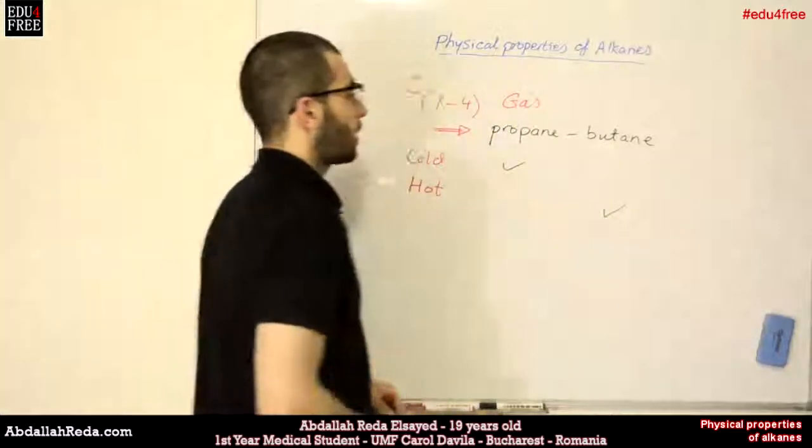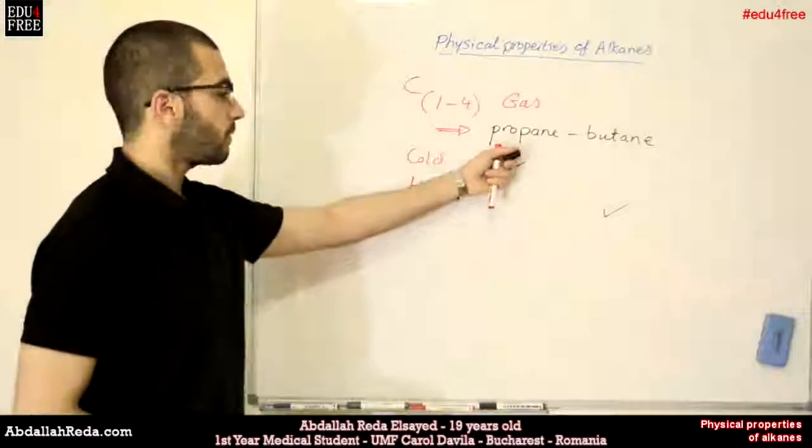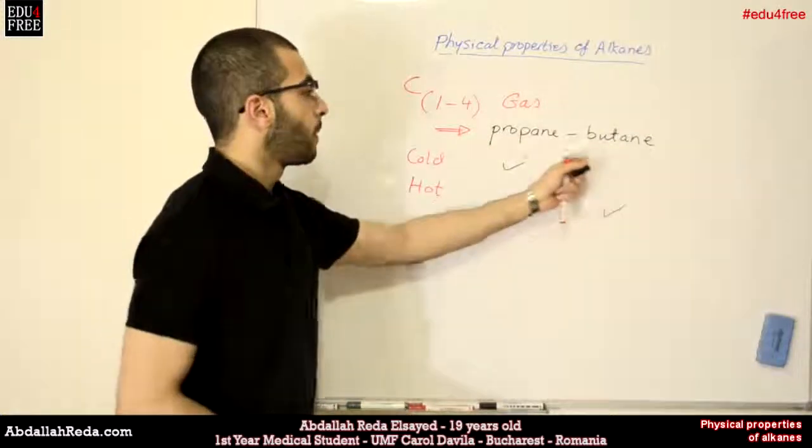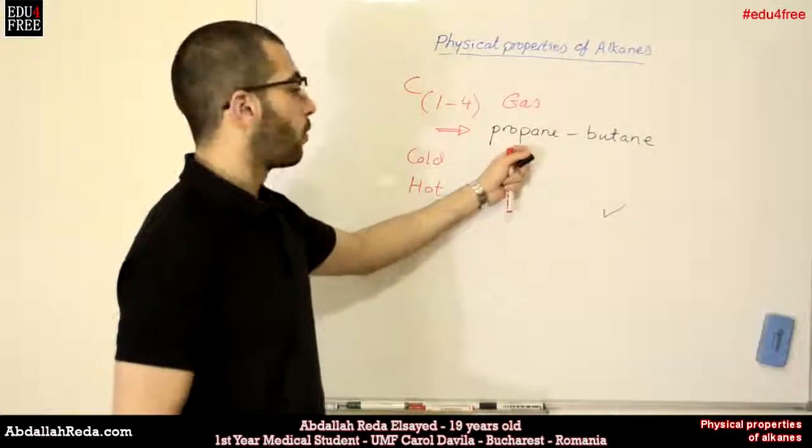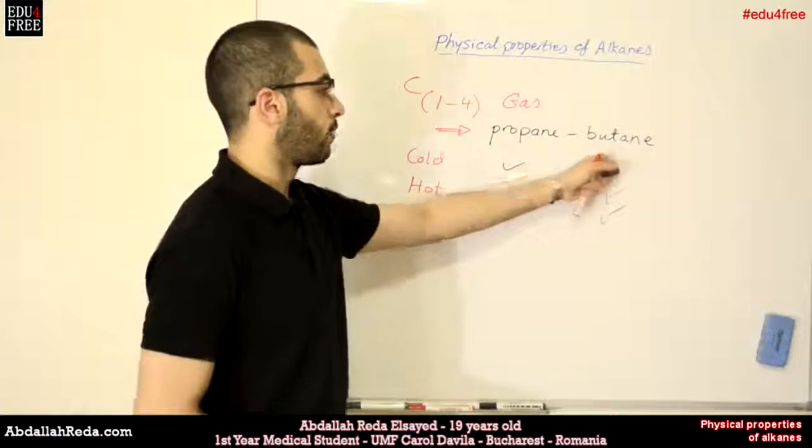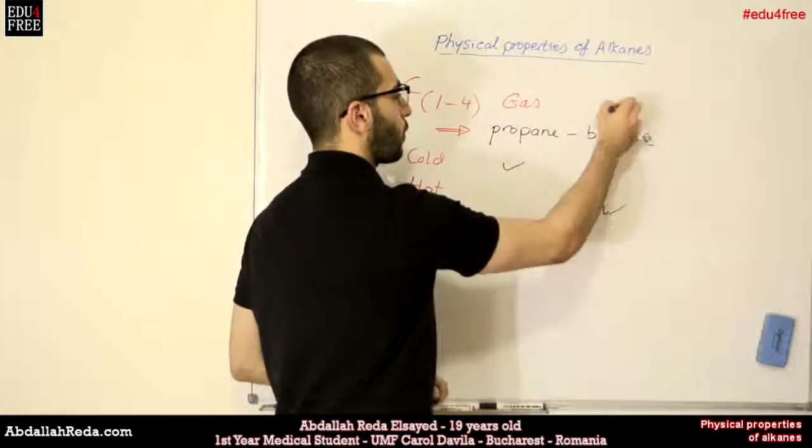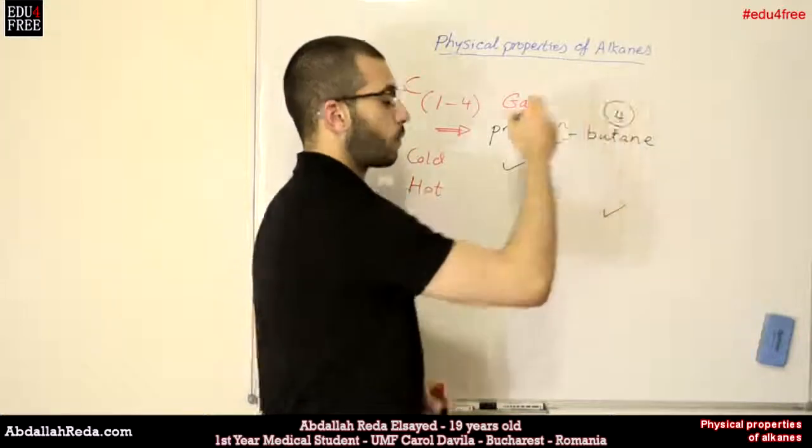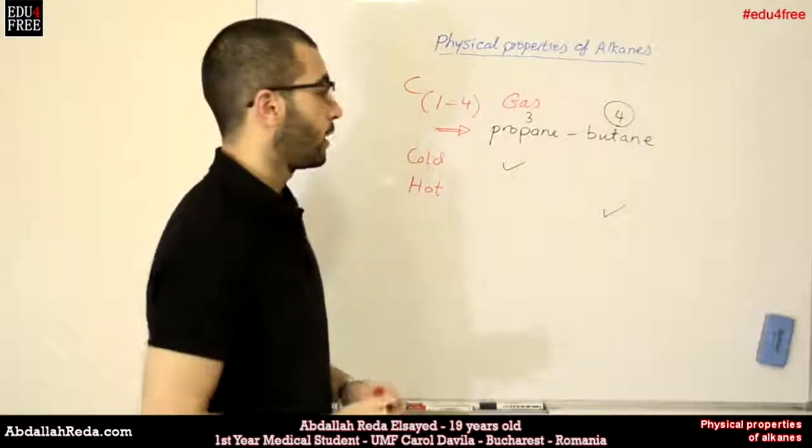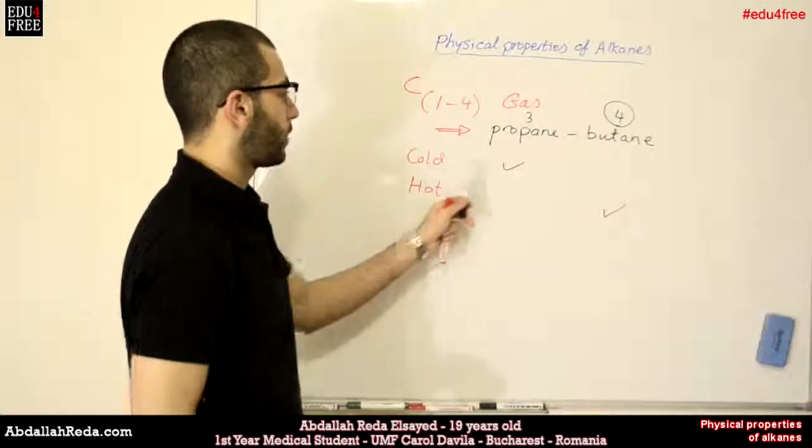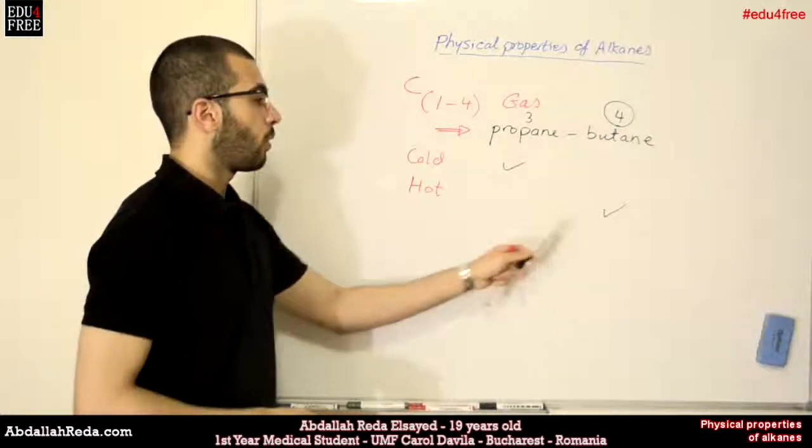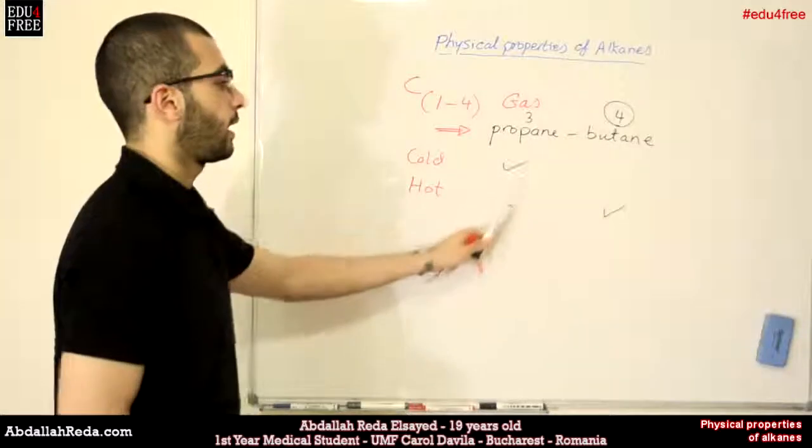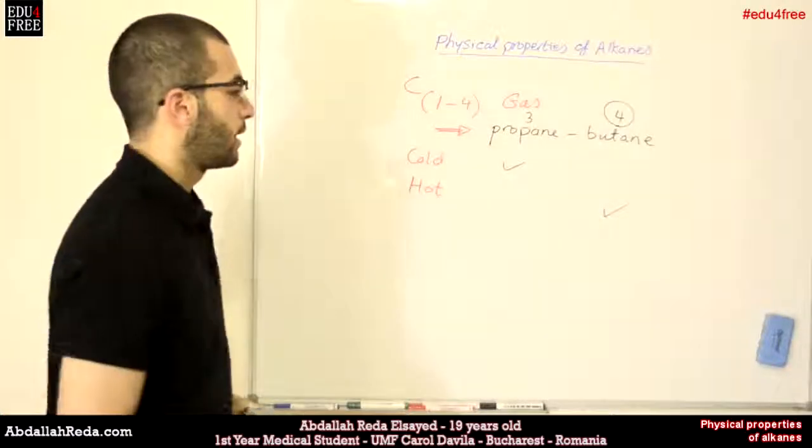Why? Because propane is more volatile than butane, or in other words, propane has a lower boiling point than butane because the number of carbons in butane is 4 while in propane is 3. The higher number of carbons increases the boiling point. That's why in cold areas we will find more propane while in hot areas we will find less propane because it's more volatile and the gas will be less effective.